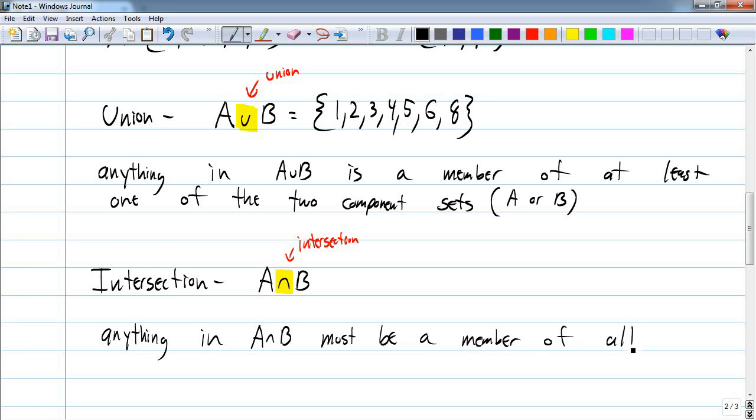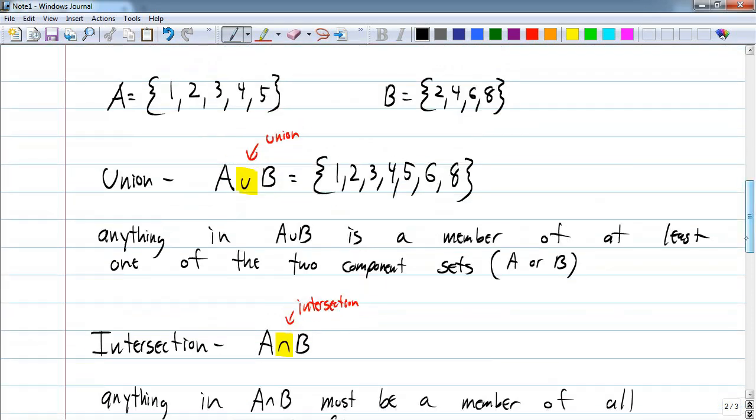...of all component sets, so A and B. If it's in the intersection, it has to be in A and in B—it has to be in both. So if you look up here at A and B, what elements are in both? That would be 2 and 4. Only 2 and 4 are in both, so they are in the intersection.